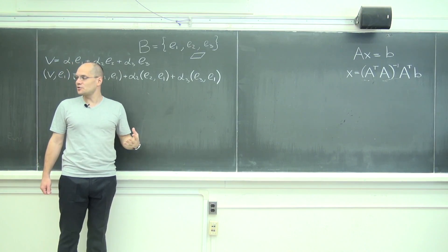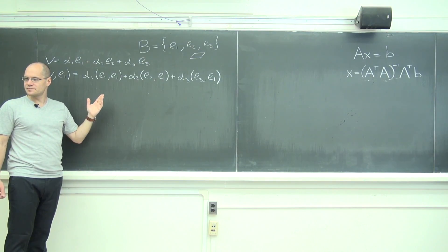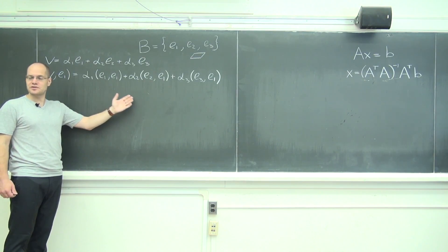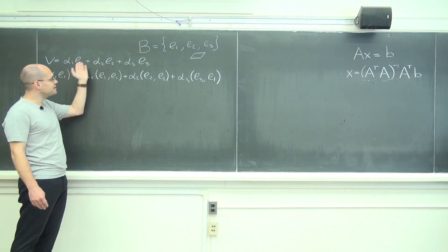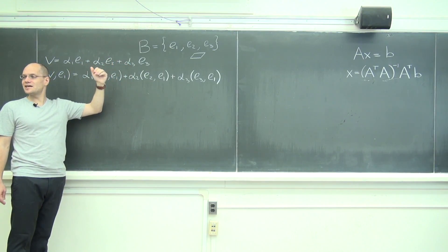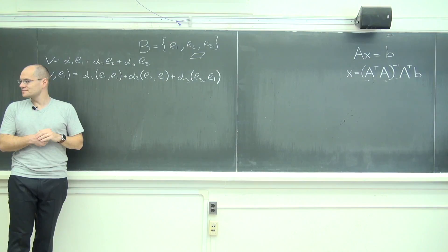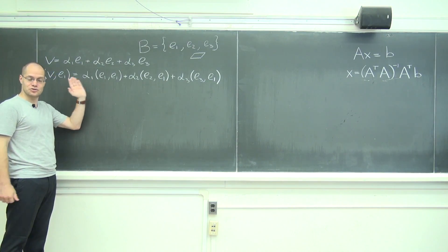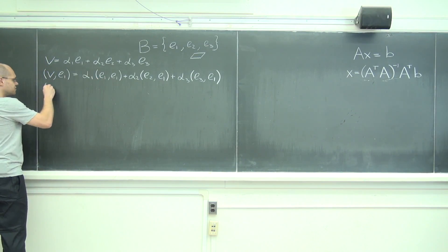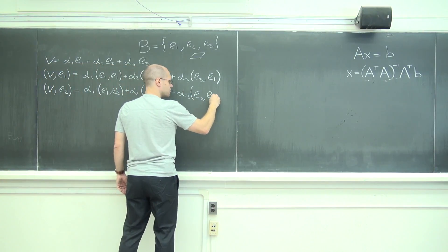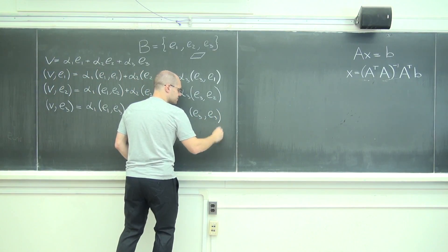But we can get another equation for the same three unknowns by dotting both sides of the identity with e₂, giving us two equations. That's still not enough, so we dot with e₃ as well. Then we end up with three equations and three unknowns, and the only question is: what is that matrix? Let me write it out so you can use your imagination — but I'll just write it out.